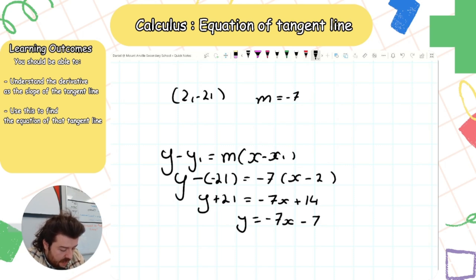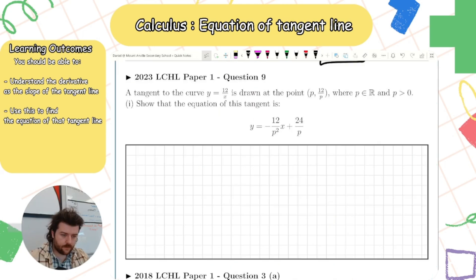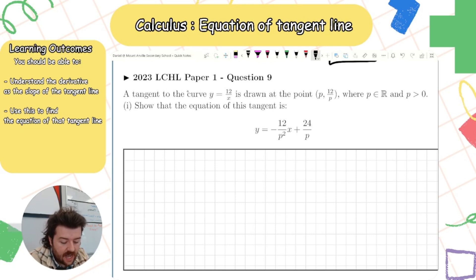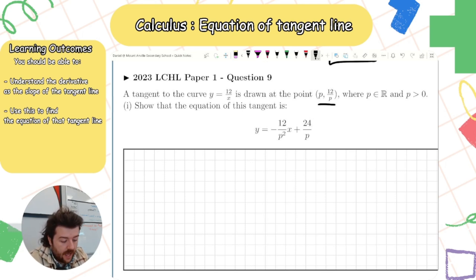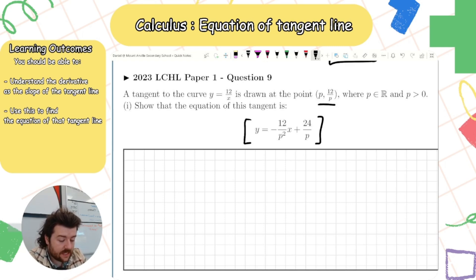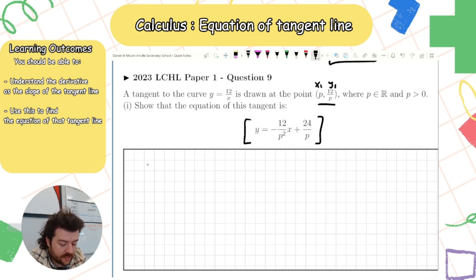Now let's try this one from 2023. A tangent to the curve y = 12/x is drawn at the point P with coordinates (p, 12/p), where p is a real number greater than 0. Show that the equation of the tangent is as given. I have my point: x₁ = p and y₁ = 12/p. Now I need my slope, which is the first derivative evaluated at x = p.